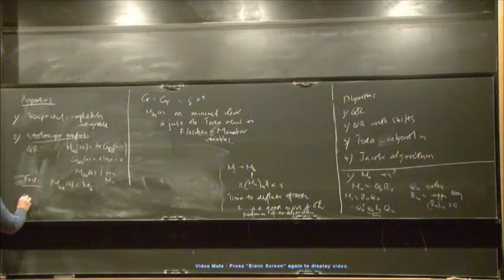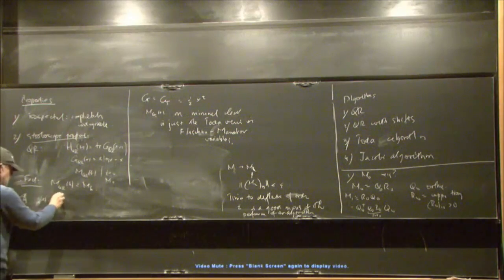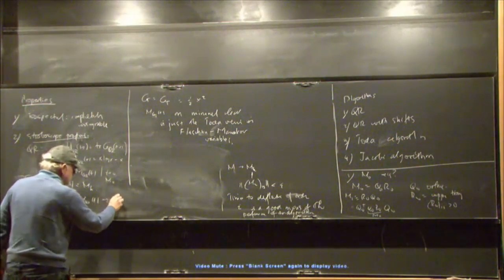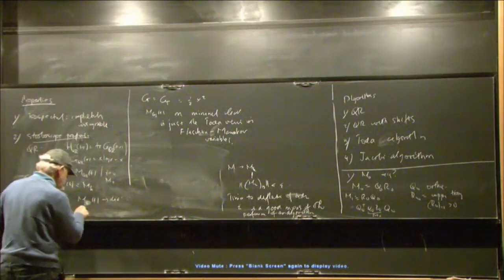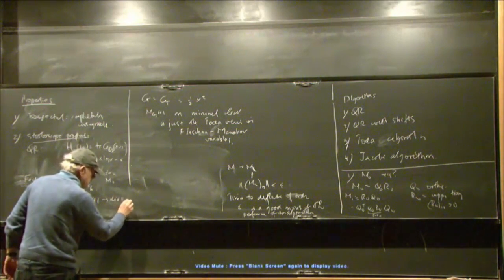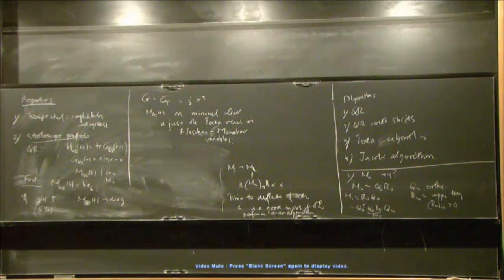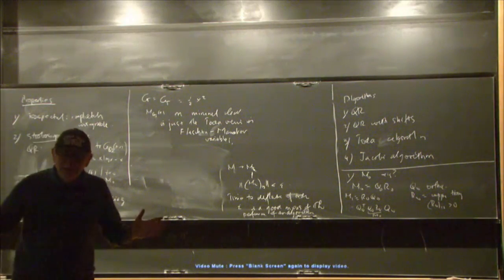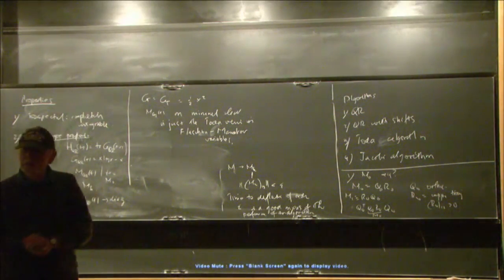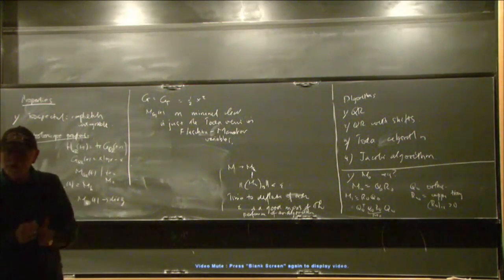In each of these flows for each choice of G have some version of this stroboscope property. Then the next fact is that if G of X or if G prime of X is monotone, then MQR of T will converge to a diagonal, or this will be true for general flows. So for a general flow, remember G is G prime. If this is monotone, then this is going to converge to a diagonal matrix. So any choice of G for which G prime is positive is an algorithm.